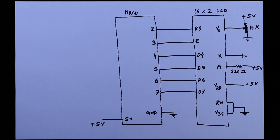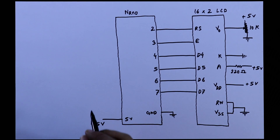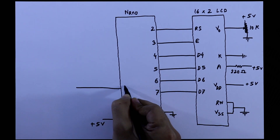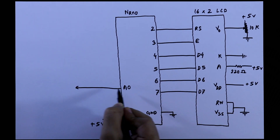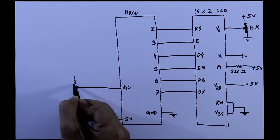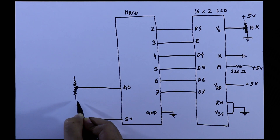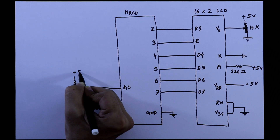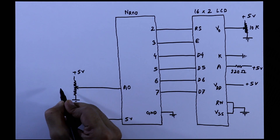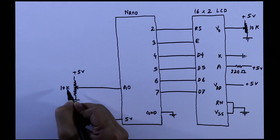Now we have to connect the LED which we are going to control. We need a potentiometer so that we can control the LED. The middle pin of the potentiometer will connect to an analog pin — here it is the A0 pin. One end of the potentiometer is connected to ground and the other to plus 5V. The value of this potentiometer is also 10K ohms.